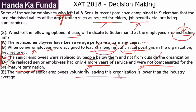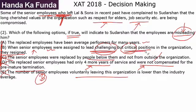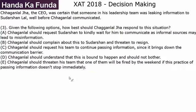Option E: Number of senior employees voluntarily leaving the organization is lower than the industry average. This has nothing to do with industry averages — this is a fight between the employees who left and the new management. What can lead to animosity between them? Only Option B gives a reason: they were assigned challenging and critical positions they didn't want, they didn't want to step out of their comfort zone, and that caused all of this. The answer is B.